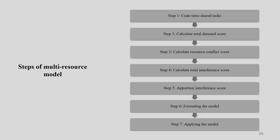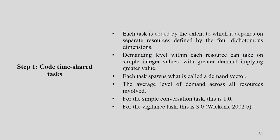Once we calculate the total demand score, we calculate the resource conflict score — we have the total demand score and then try to understand where those conflicts are. Then we calculate the interference score; once we understand the conflict, we understand the interference. From there, we apportion the interference score, extend the model, and apply it in that particular situation. Each task is coded by the extent to which it depends on separate resources defined by the four dichotomous dimensions.